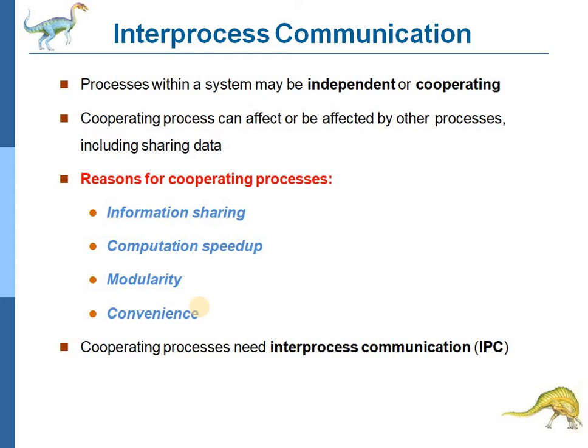The next reason is modularity. Modularity divides the system into different modules so that running an operating system becomes easy. The original architecture of an operating system is very complex because it has a huge number of services and components. That's why the operating system is divided into different parts called components. Each module and each component has its own distinct functions to perform. The modularity divides the system into different modules, allowing different functions to be separated into different processes or threads.